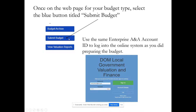Once you click that button you will see a blue login screen appear, and you would use the same Enterprise ANA account ID to log into the online system as you did when you prepared your budget — same system, same login as the original budget. If you have questions about access to the system, follow up with the DOM person responsible for that budget type and they can help make sure the correct people have access to your budgets and amendments.